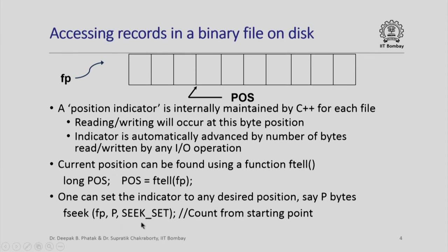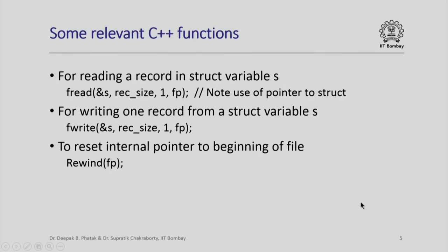To recapitulate: we can find out the current position of the position indicator by ftell, and we can set the current position indicator at any place that we desire by using fseek. Once we do that, the two functions fread and fwrite can be used to read or write data.